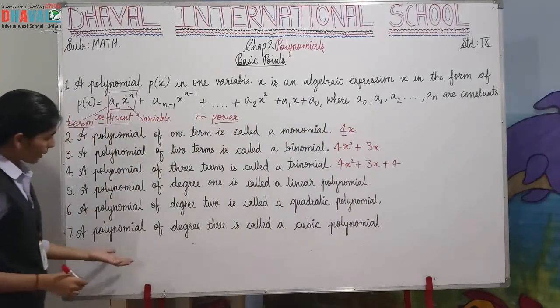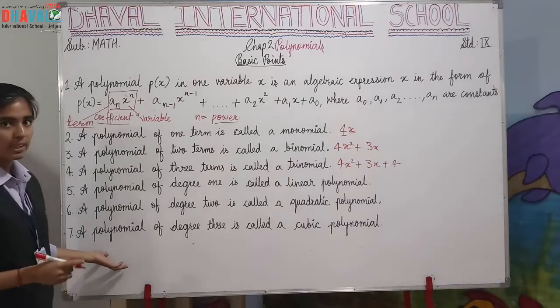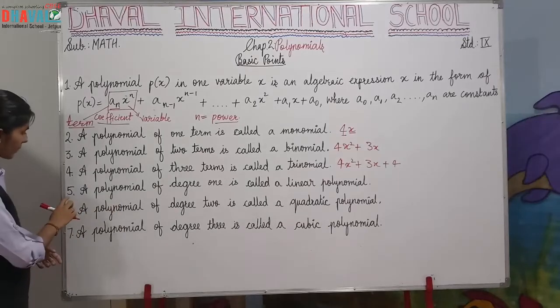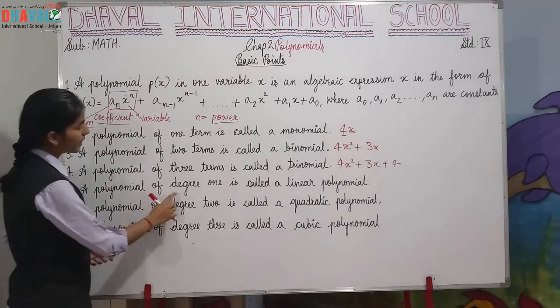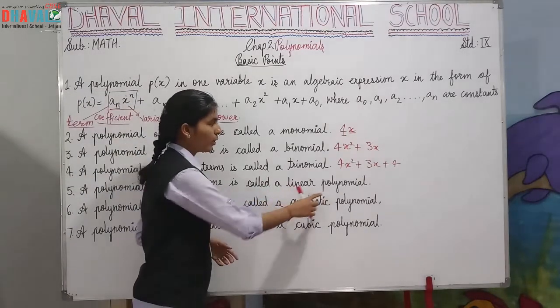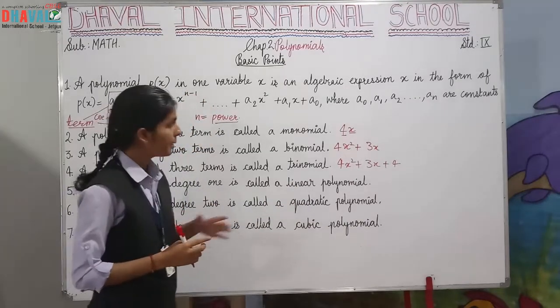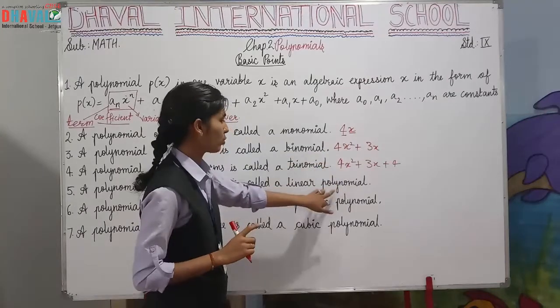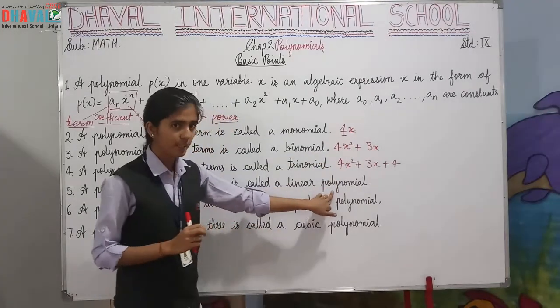Now we come to the types of polynomials on the basis of degree, which is the power. A polynomial of degree one is called a linear polynomial. This polynomial, when x has degree one, we call it a linear polynomial.